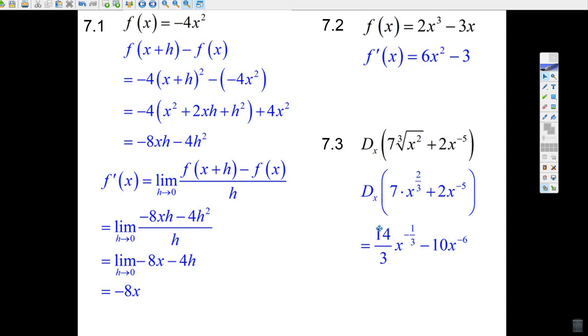I'll just go 7 times 2 over 3. It's 14 over 3. It goes in front. Subtract 1 from 2 thirds. You get minus 1 third. There it is, your answer.